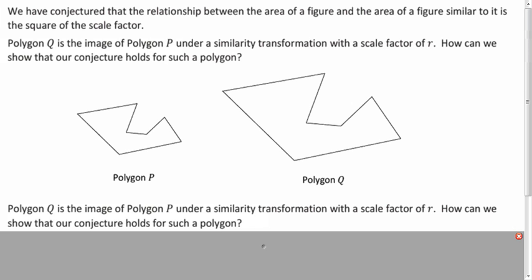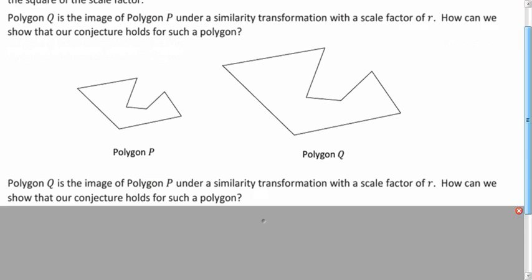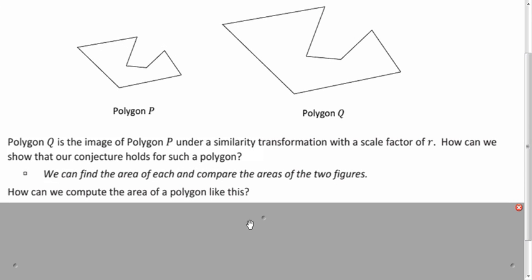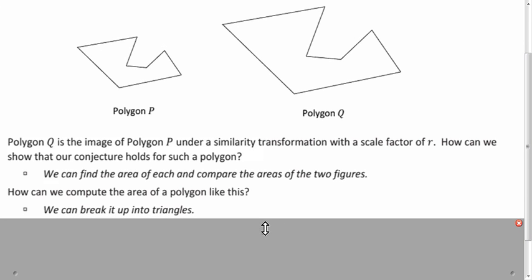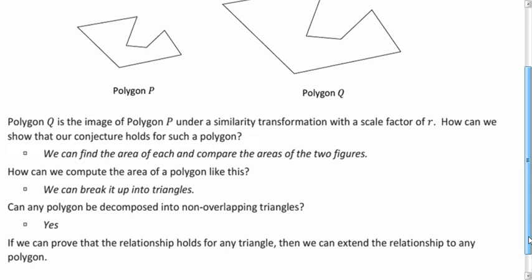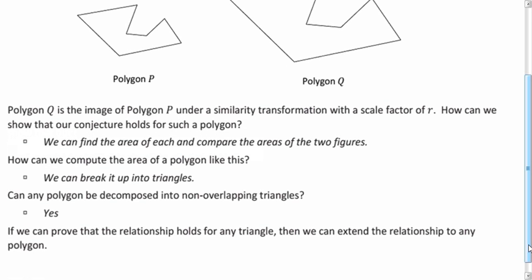We want to show that this property works for any type of polygon, even these strange polygons that we don't have a nice, straightforward formula for. How can we show that R squared is the scale factor for the areas? We would have to figure out their areas, right, and then divide them. How could we figure out the area of these types of polygons? We could break them up into triangles. Can we always do that for any type of polygon? Yeah, we learned that property in a previous lesson. You can always triangulate a polygon. So if we can show that this property holds for triangles, then it must hold for any polygon because we can always make a polygon out of triangles.